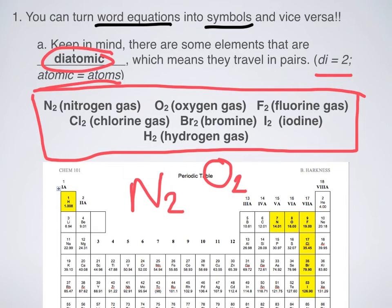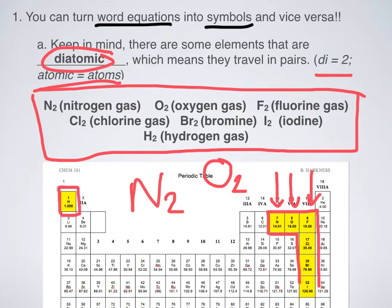The seven diatomic elements are: nitrogen, oxygen, fluorine, chlorine, bromine, iodine — six of which form that seven shape on the periodic table — and hydrogen, which is the exception and not found in that seven. This is really important because in word equations you'll see 'oxygen gas' or 'chlorine gas' or 'hydrogen gas,' and if you just write the element by itself, that would be incorrect. You need to write N2, O2, F2, Cl2, Br2, I2, or H2.